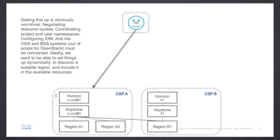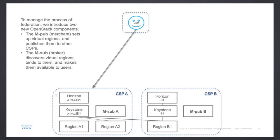Setting that up is non-trivial because of coordination of namespaces, configuration of IDM, and there's a whole bunch of stuff which is out of scope for OpenStack that also needs to be dealt with, like the operational systems and the business systems — billing, et cetera. So what we do is introduce two components: MSUB, the subscriber side, and MPUB, the publisher side. These two work together to define available virtual regions, to publish them, and then to consume them.